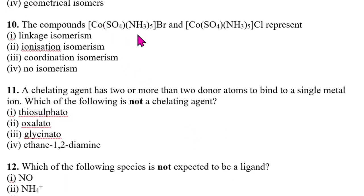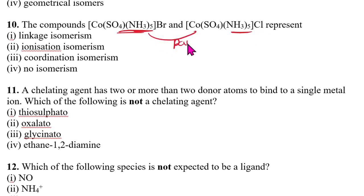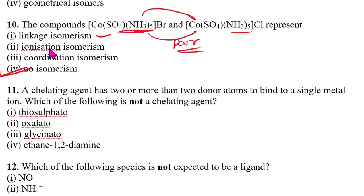Tenth question: which type of isomerism exists between two given compounds? Here we can say ionization isomerism. But for linkage isomerism, you need two different donor atoms; for ionization isomerism, you need ions outside the sphere. In this particular case, neither condition is met, so no isomerism is possible — that is the answer.